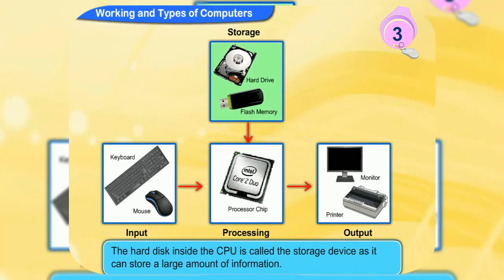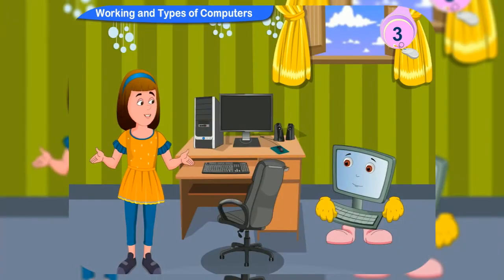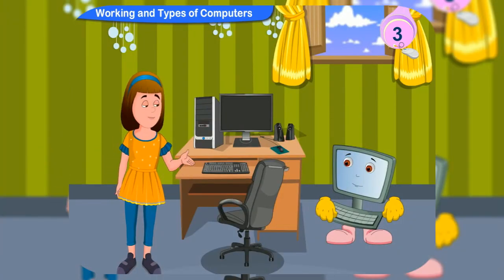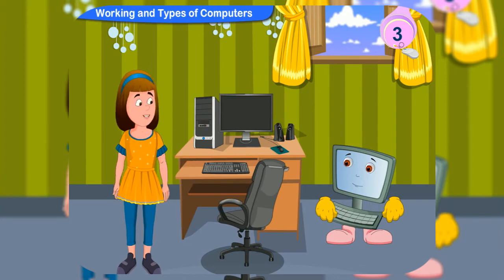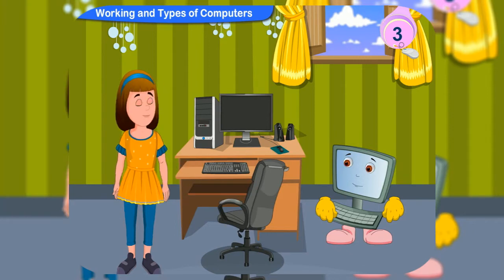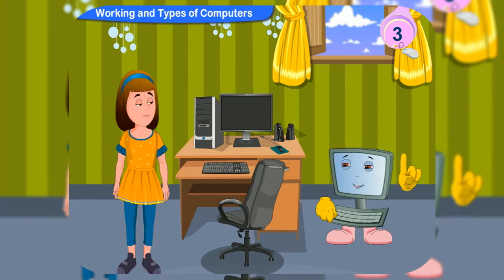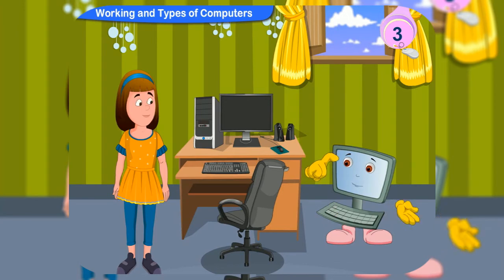The hard disk inside the CPU is called the storage device, as it can store a large amount of information. Our teacher said that computers are of different types — some are small, some are fast, and some are large. There are various types of computers based on their speed, size, and cost.